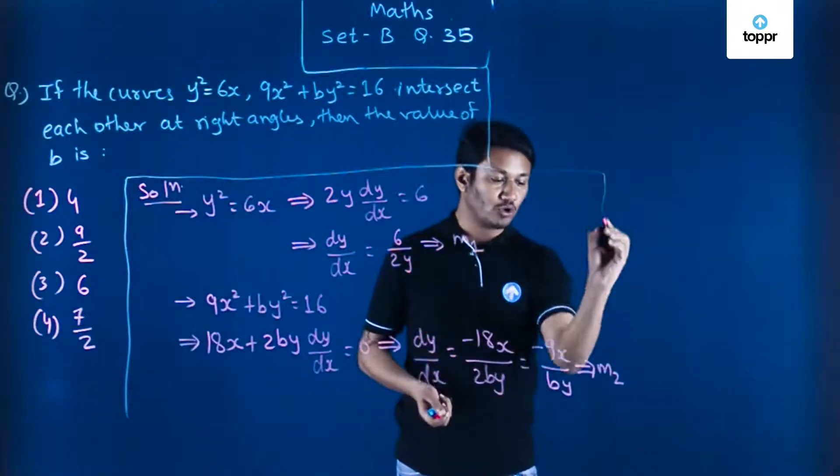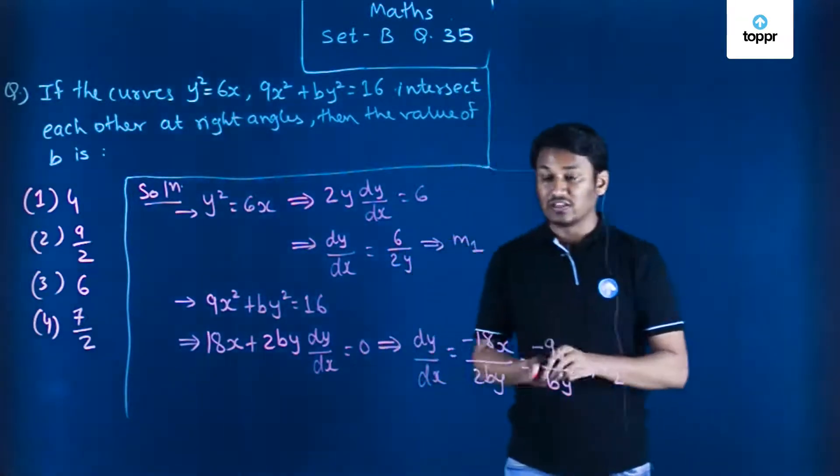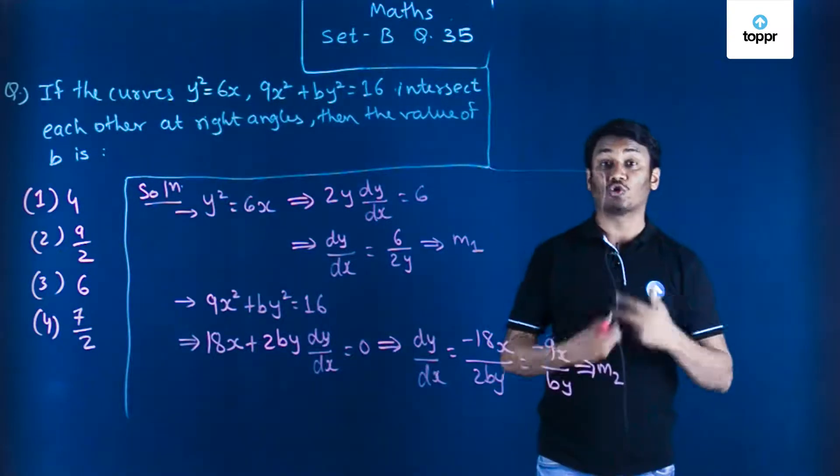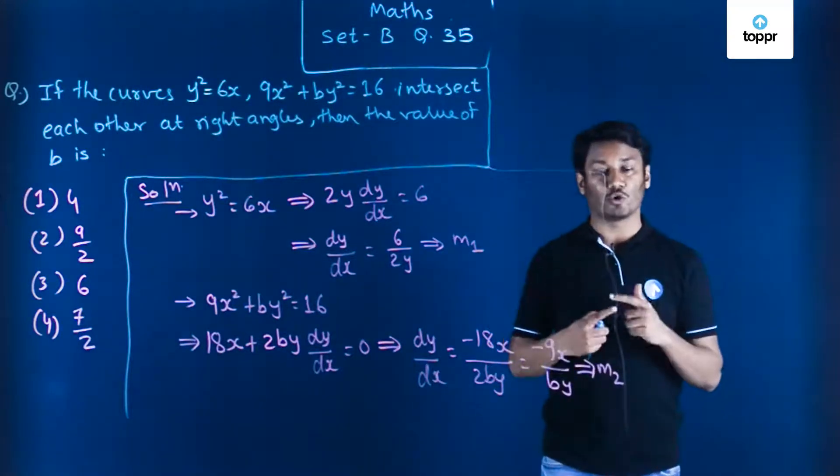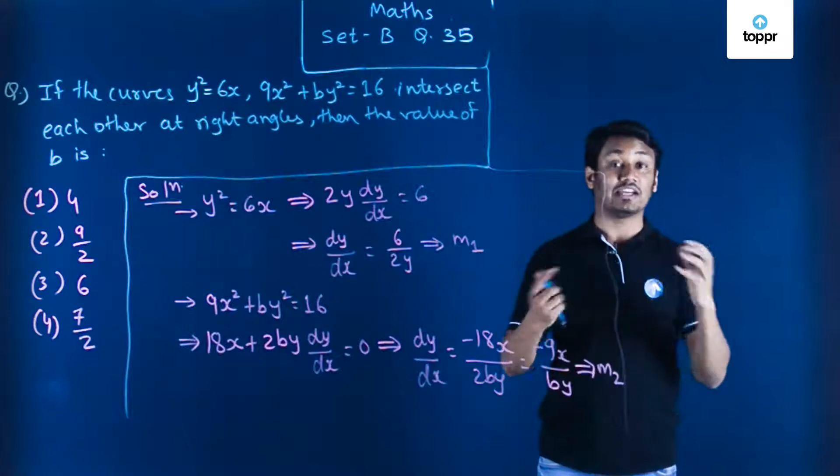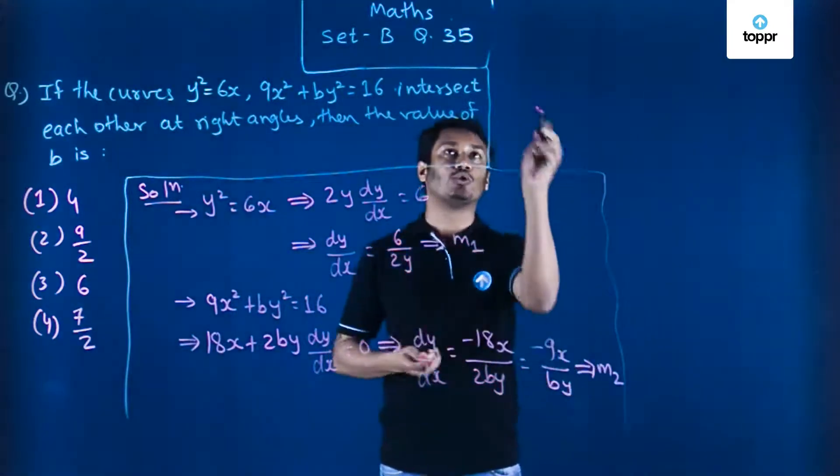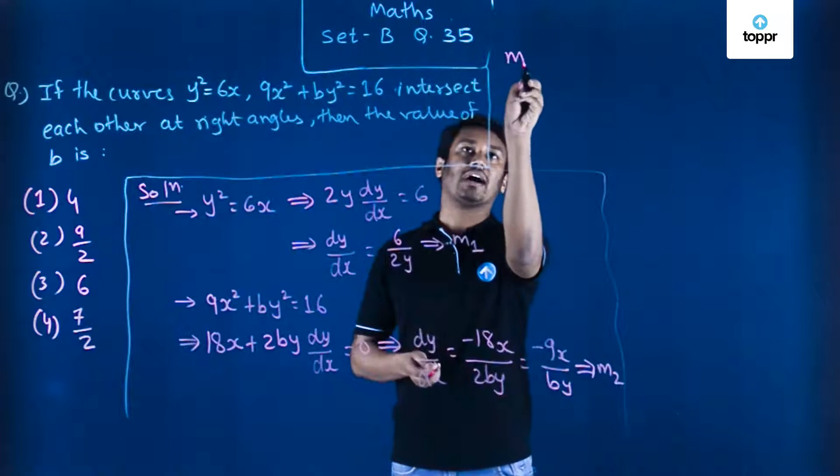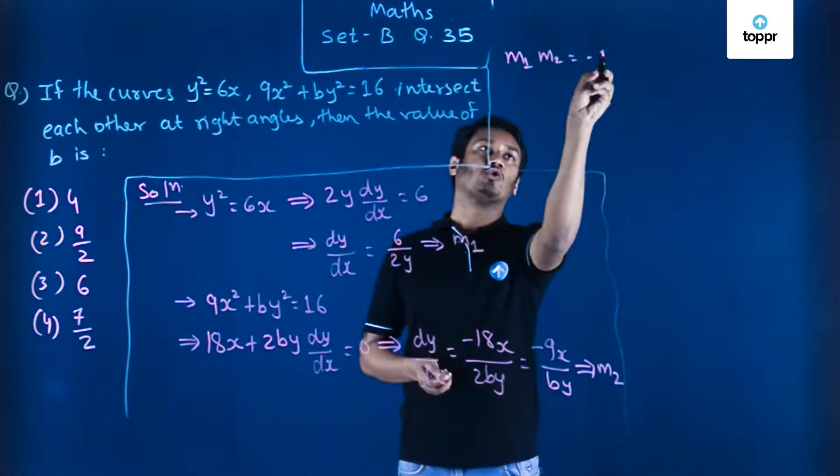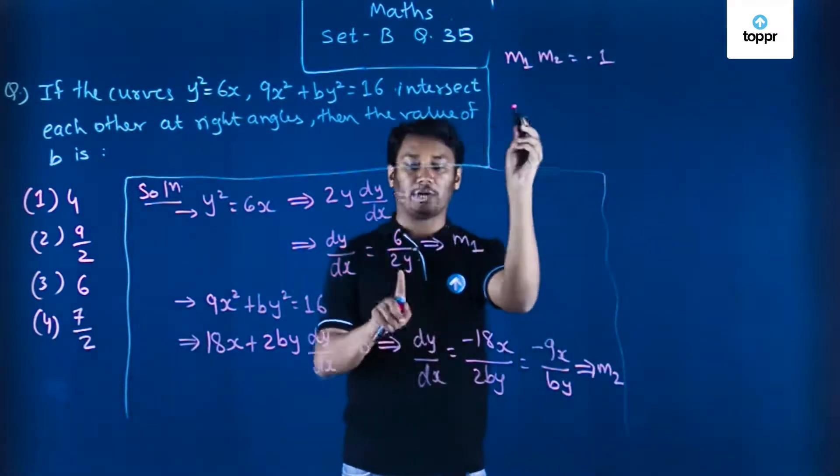So basically we have got both the slope values, and this m₁ and m₂ represent slopes of two tangents which will be perpendicular to each other because curves are intersecting at right angles. So I can simply use the property that m₁m₂ will be equal to -1. The product of slopes will be -1.